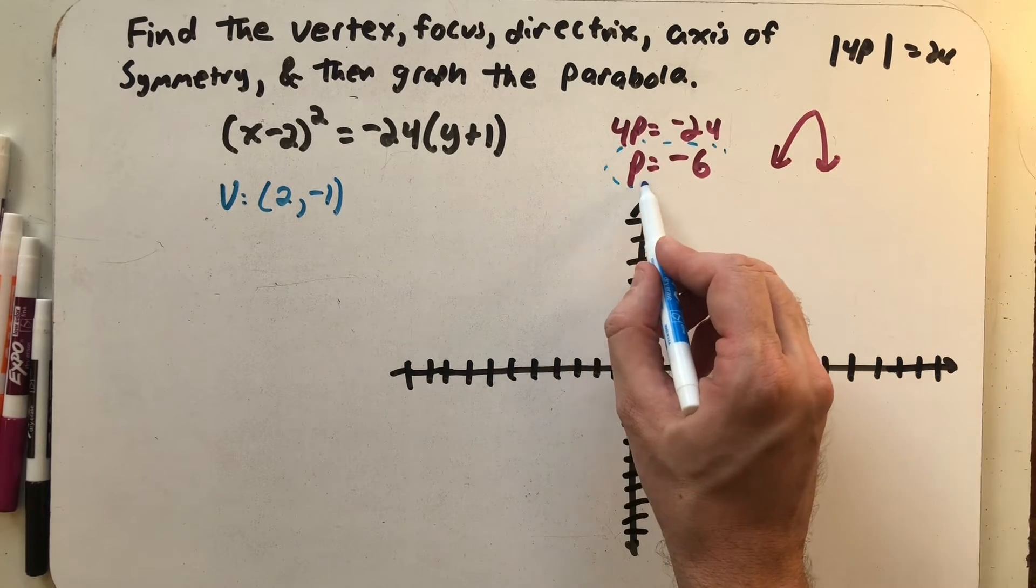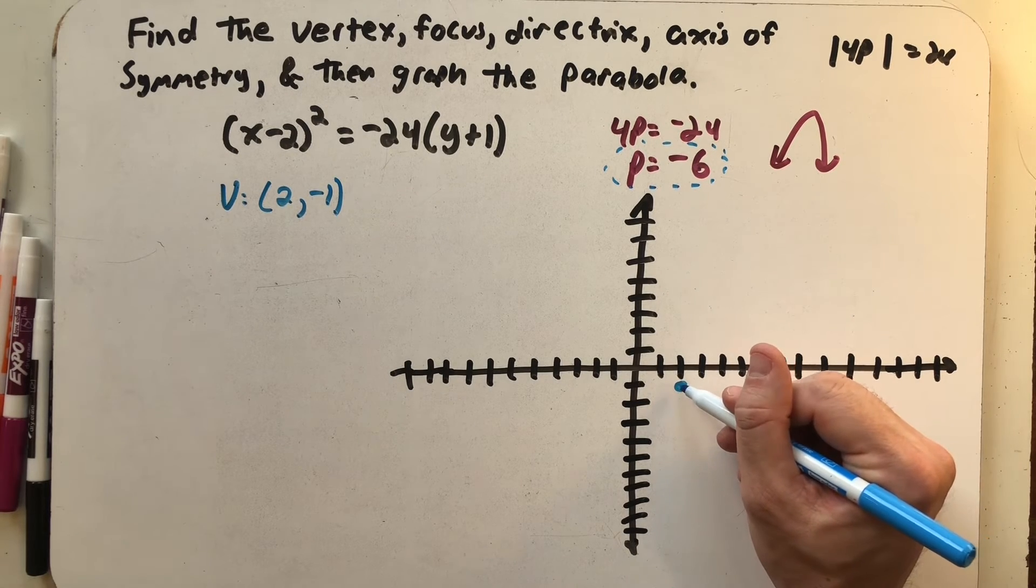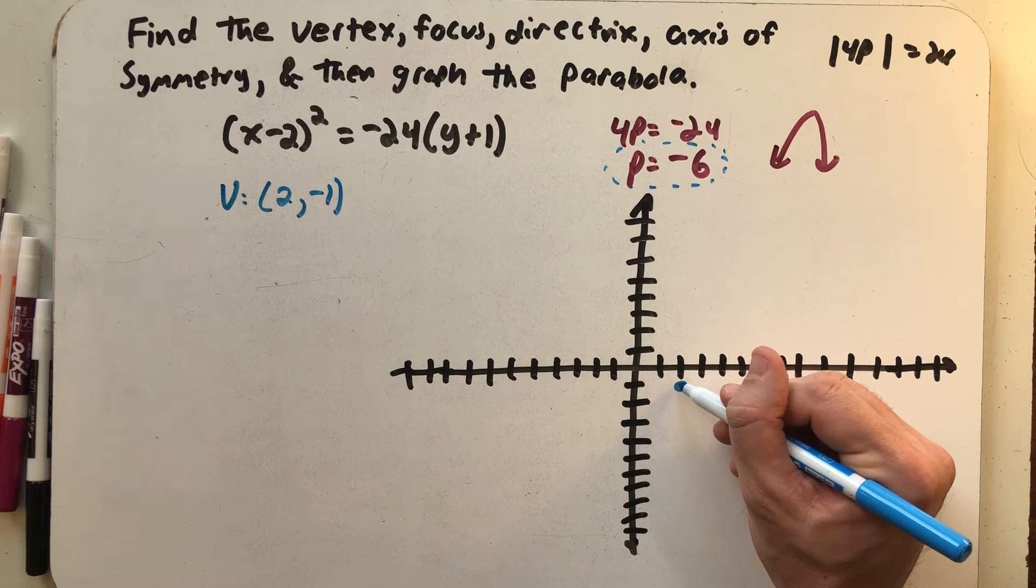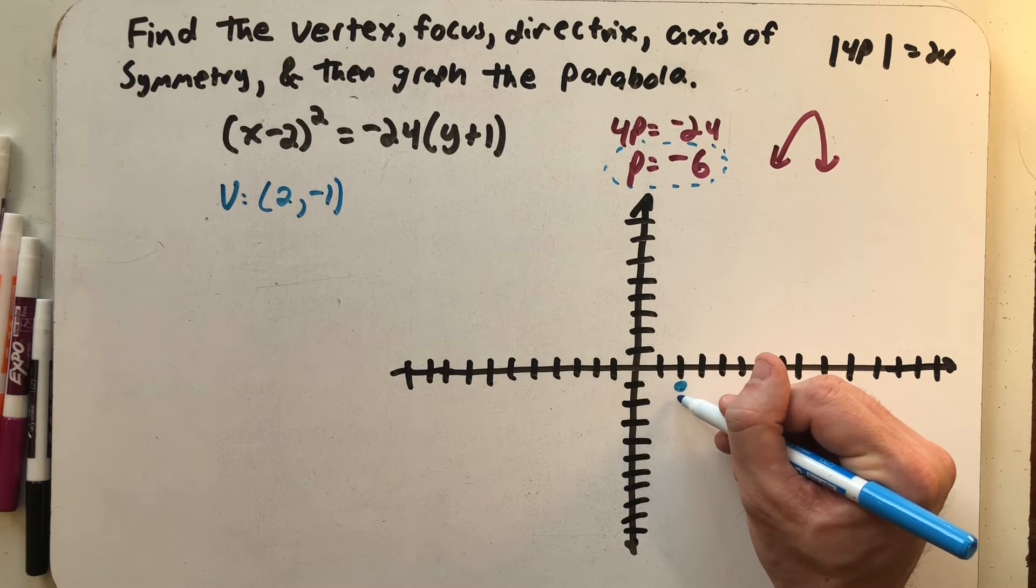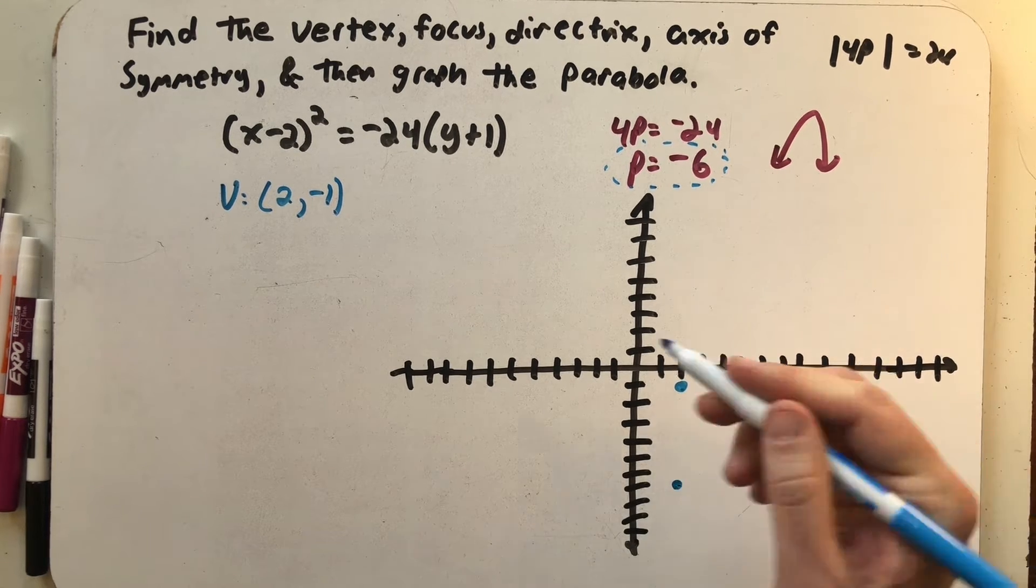p is how I find my focus. My parabola faces down, so I'm thinking that my focus needs to be 6 units below this vertex. So I'll just count down 6. And so there's my focus.